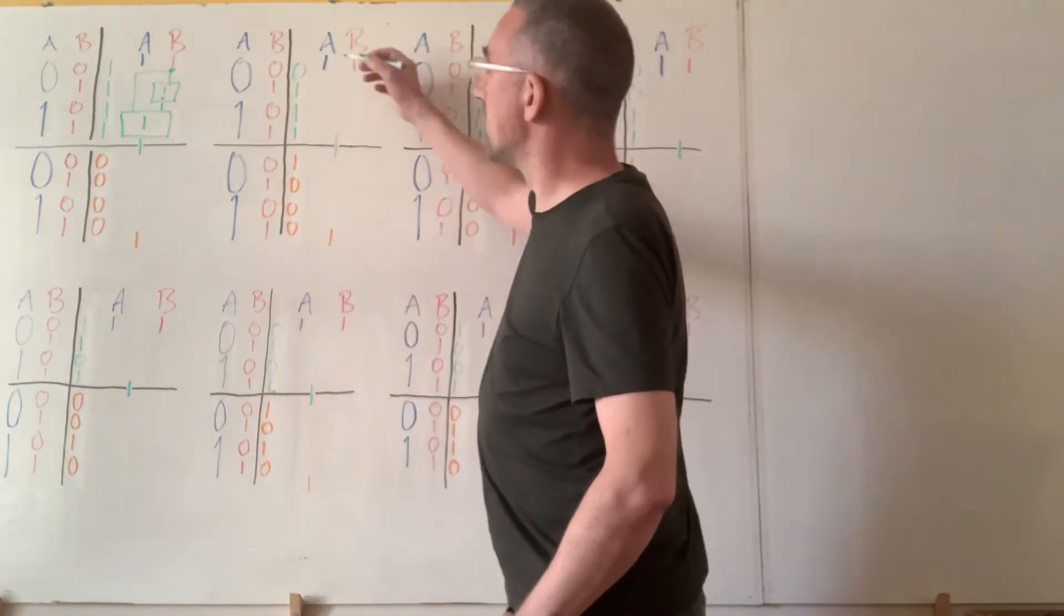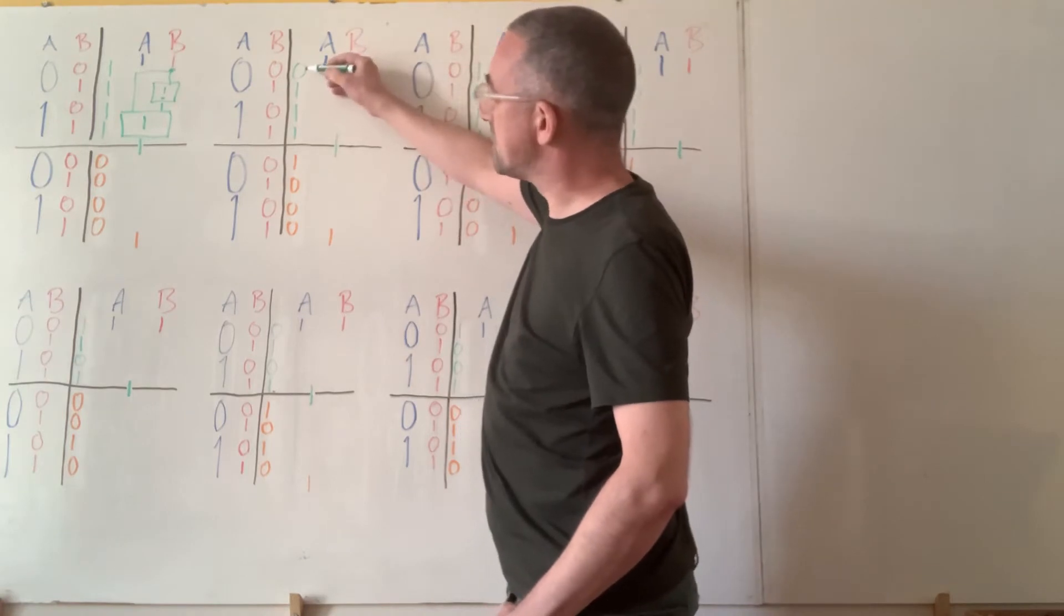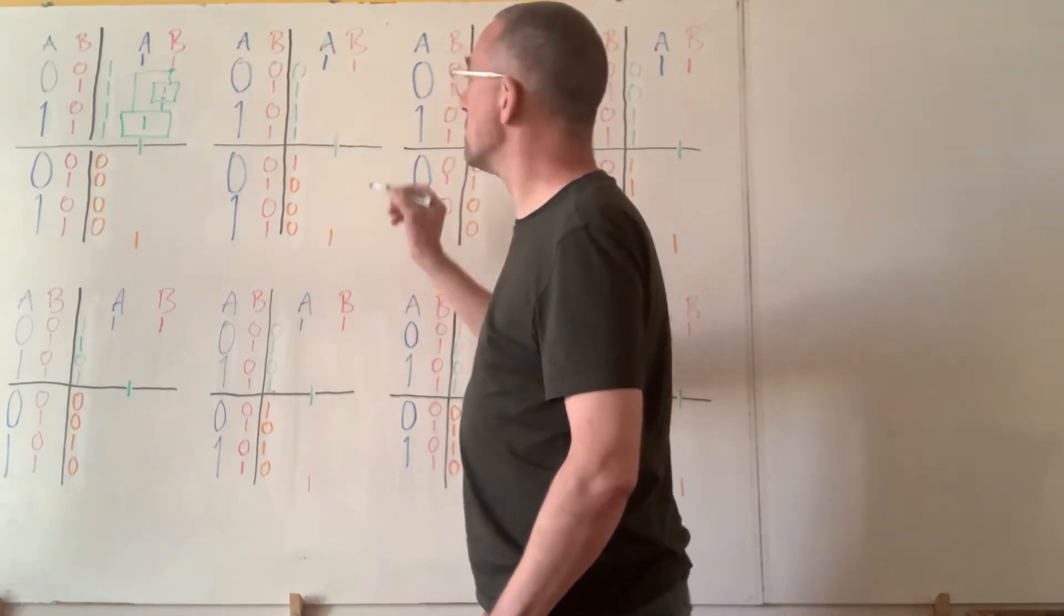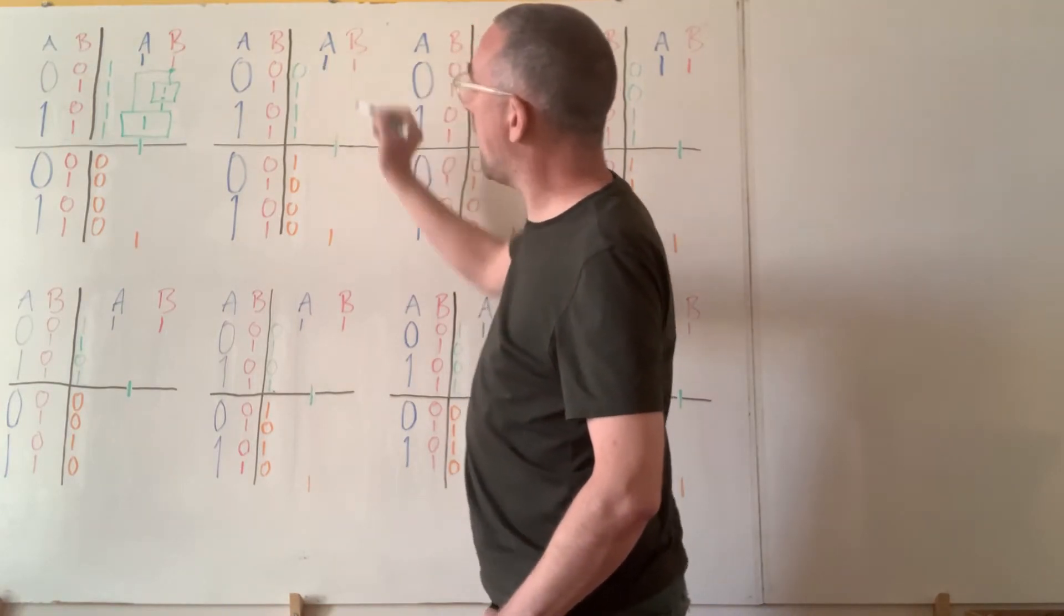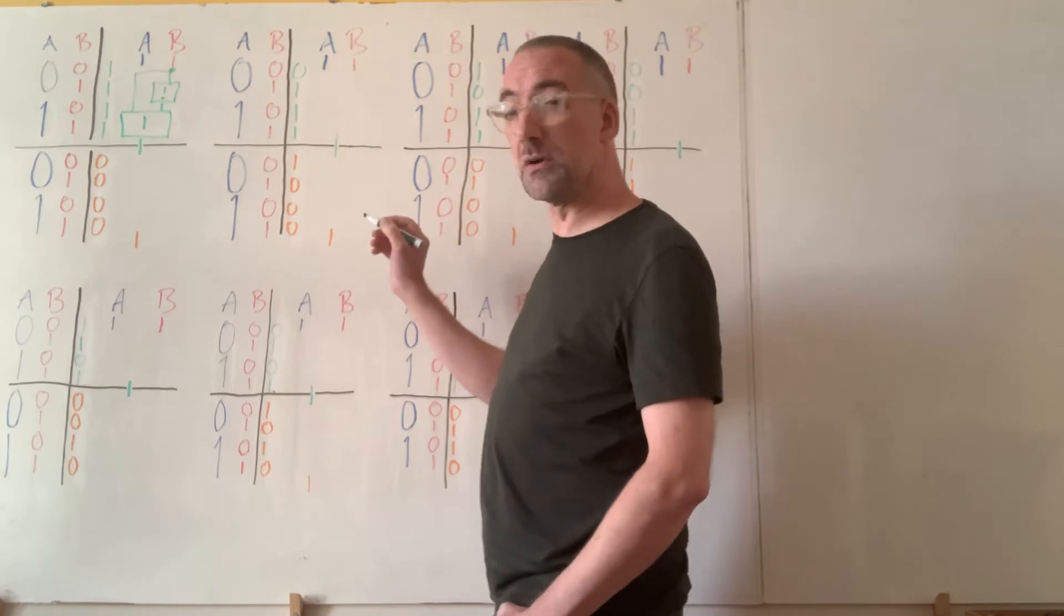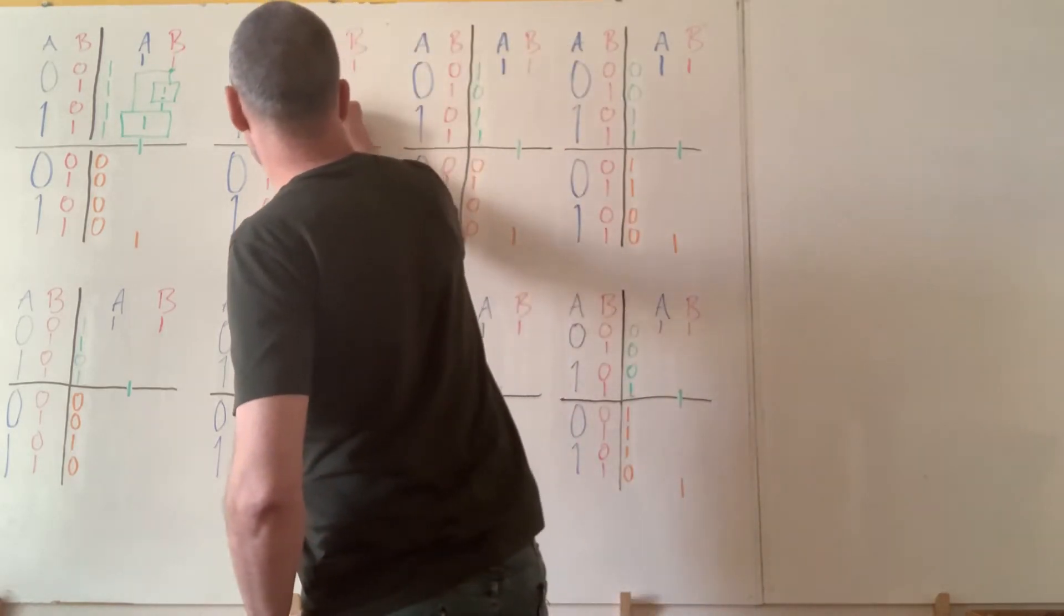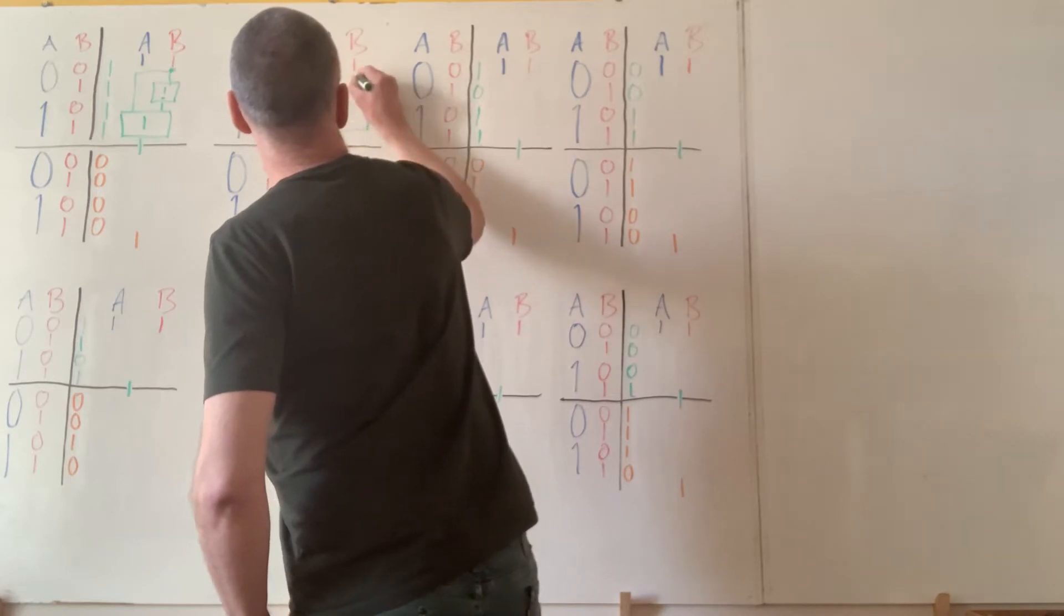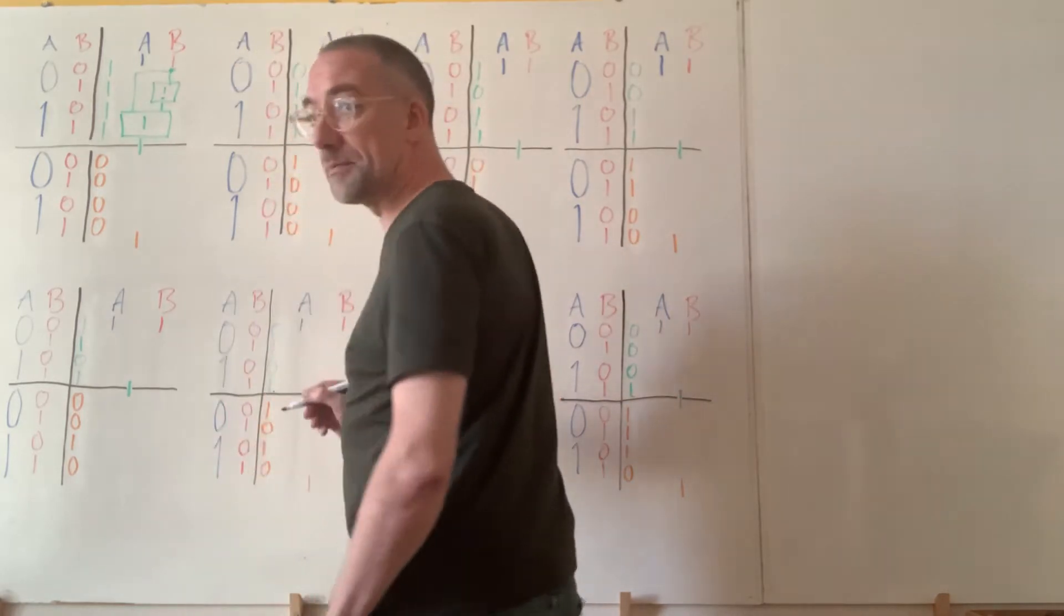Alright, moving along. Now we've got 0111. We're counting down from 15 to 0. What have we got here? We have got something that looks exactly like OR. So let's do it that way. Here's OR. Wire it up. Very good.